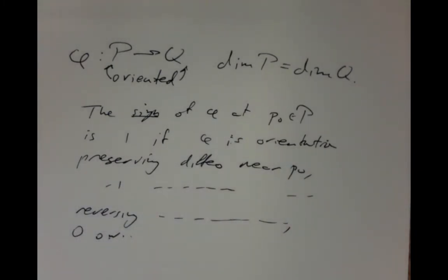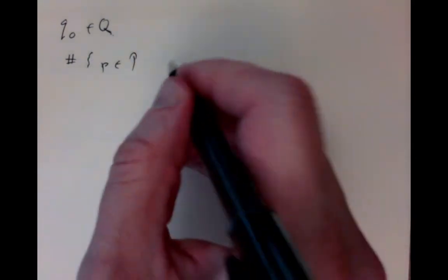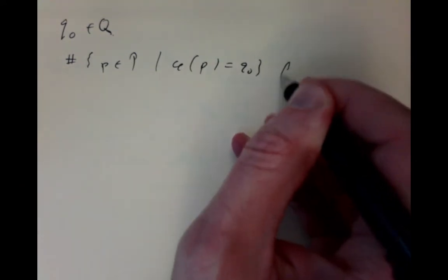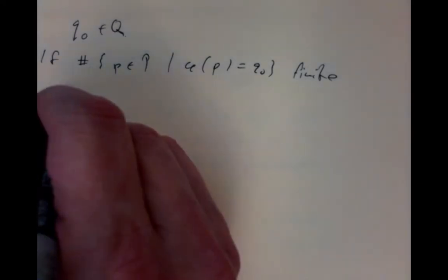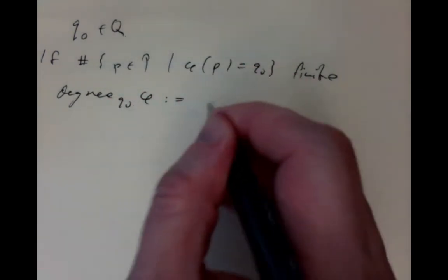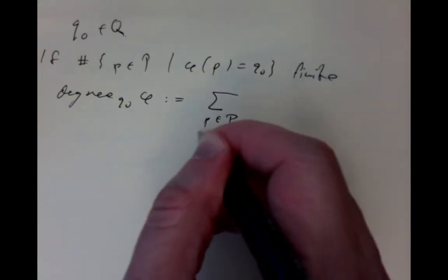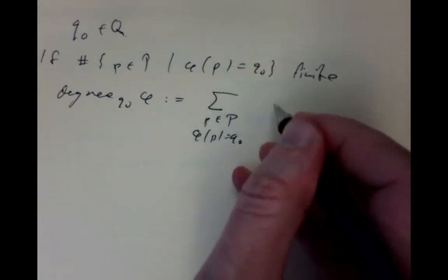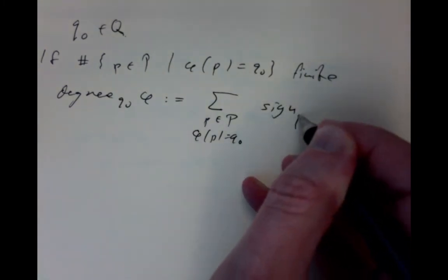If we take a point q₀ in Q, and suppose the number of points p in P such that φ(p) = q₀ is finite, then we define the degree of φ at q₀ to be the sum over all such points p of the sign of φ at p.